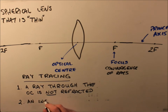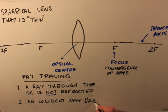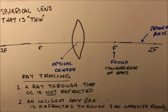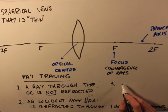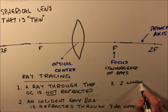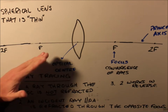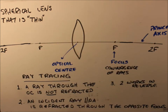Second: an incident ray parallel to the principal axis is refracted through the opposite focus. Third: this works in reverse — a ray passing through the focus on the incoming side will be refracted parallel to the principal axis. Those three rules are all we need.